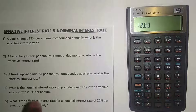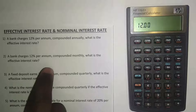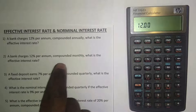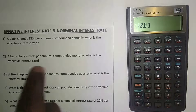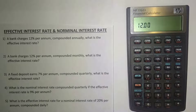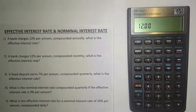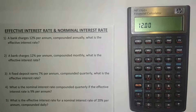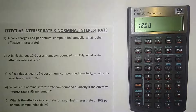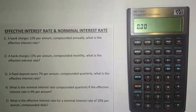Now let's look at the second example. We are told that the bank charges 12% per annum compounded monthly — what is the effective interest rate? We have a nominal interest rate of 12%, but here it's compounded monthly. Let me just clear my memory.